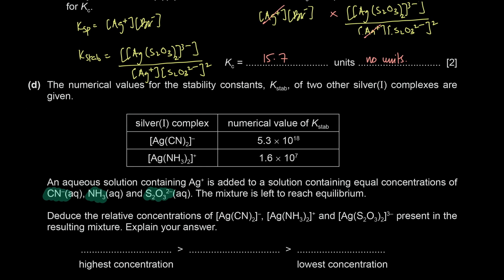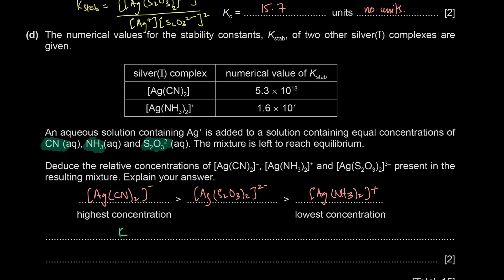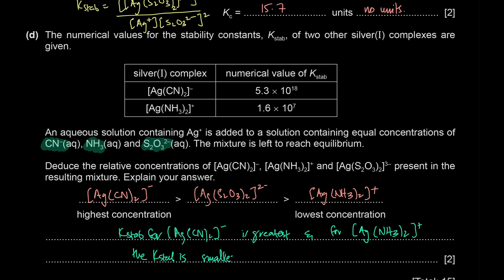So the order of concentration is: [Ag(CN)2]⁻ > [Ag(S2O3)2]3− > [Ag(NH3)2]+. The reason is that the greater the Kstab, the greater the stability and the higher the concentration of that complex formed.